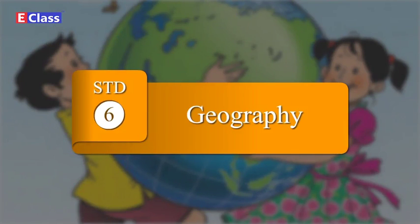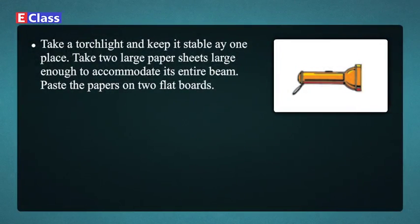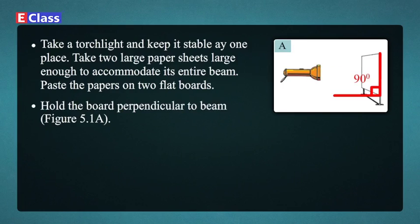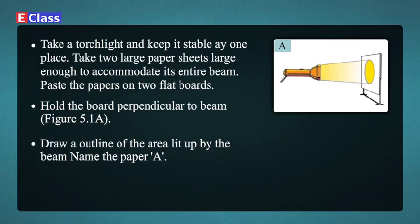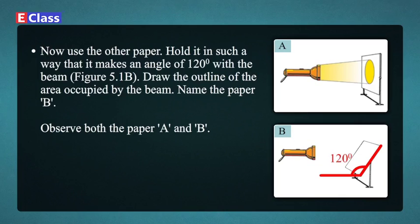Standard 6 Geography, Chapter 5: Temperature. Do It Yourself: Take a torch light and keep it stable at one place. Take two large paper sheets, large enough to accommodate its entire beam. Paste the papers on two flat boards. Hold one board perpendicular to the beam, as in figure 5.1A. Draw the outline of the area lit up by the beam and name the paper A. Now take the other paper and hold it in such a way that it makes an angle of 120 degrees with the beam, as shown in figure 5.1B.